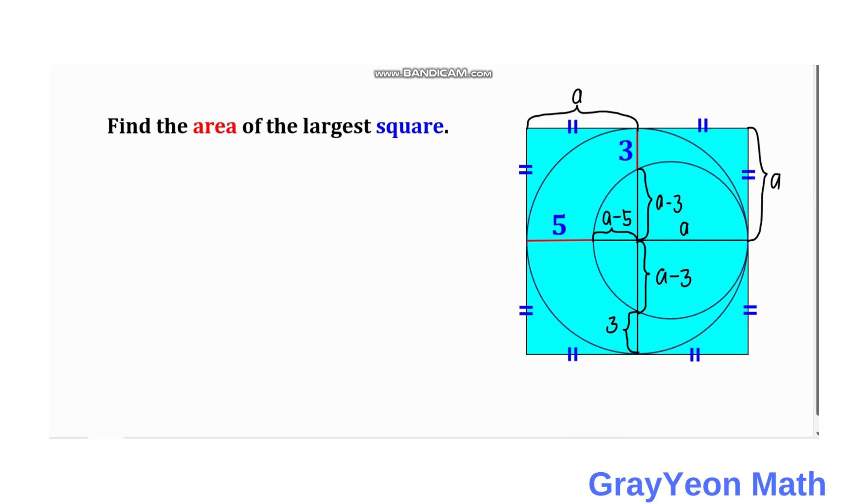Okay, so next we use the cross chord theorem, or intersecting chords theorem. We multiply this a minus 5 and a, so a minus 5 times a, and we multiply this a minus 3 and a minus 3.